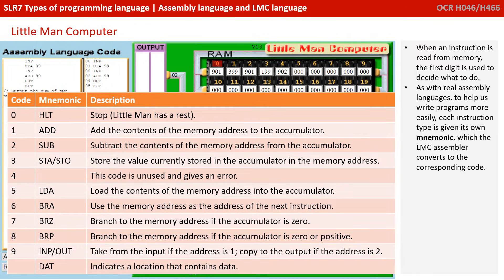When an instruction is read from memory, the first digit is used to decide what to do. As with real assembly languages, to help us write programs more easily, each instruction type is given its own mnemonic, which the LMC assembler converts to the corresponding code.